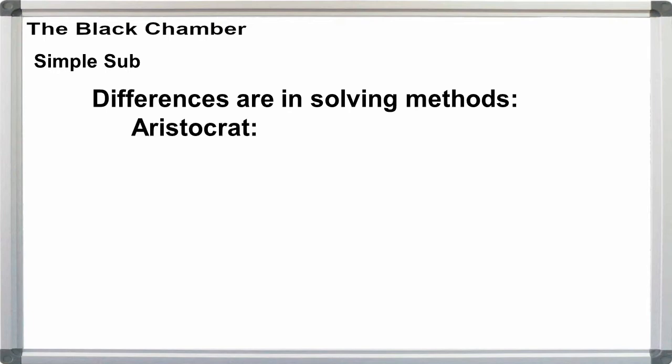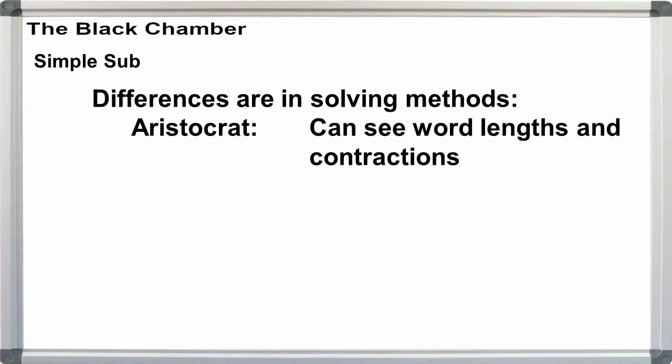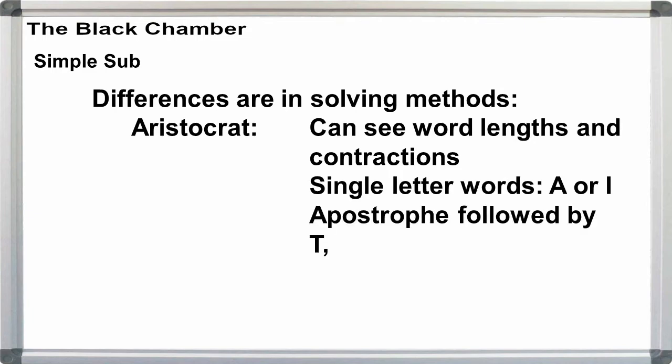Simple subs with divisions let you see word lengths and contractions. Single letter words in English are almost always A or I. Apostrophes are usually followed by T, D, S, or LL. And we can see letter patterns.